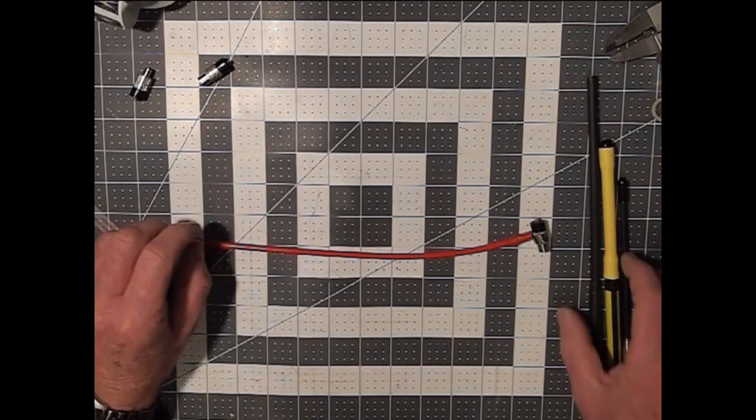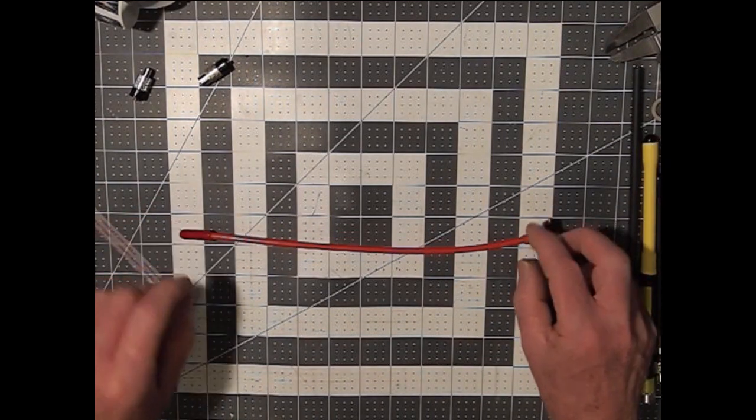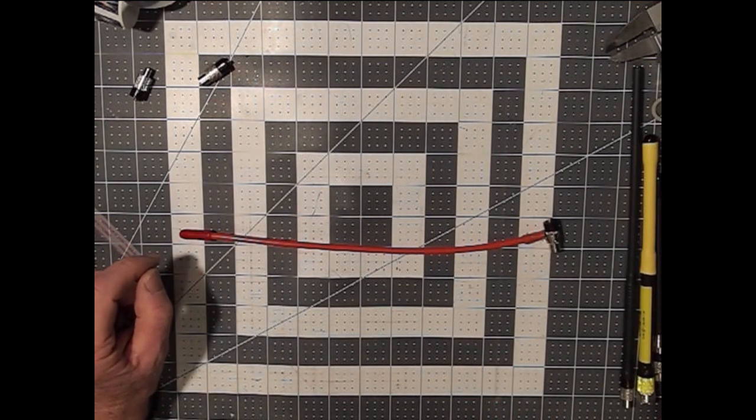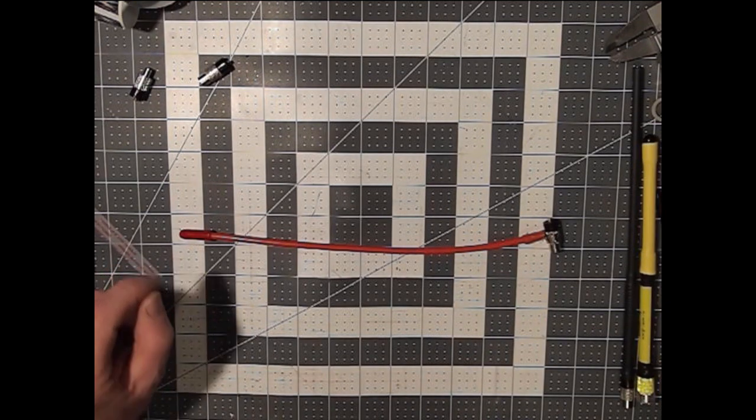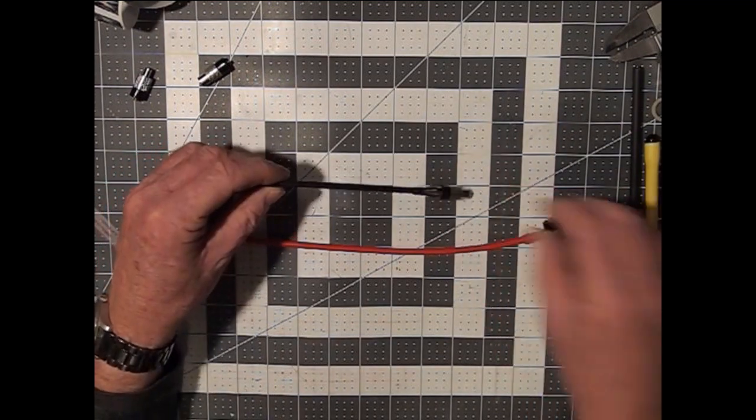Now let's talk about the optimum length for your counterpoise. A standard recommended for VHF is 11 and a half inches or so, and that's shortened to a little more than half that if you go to UHF.